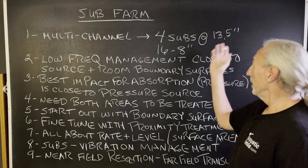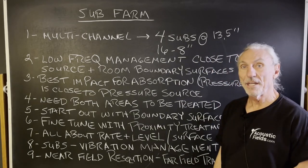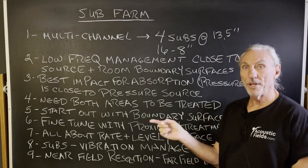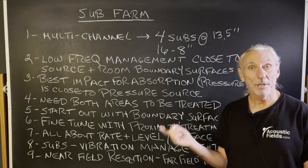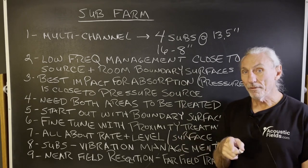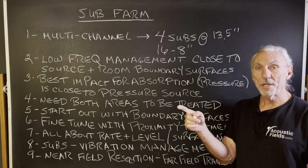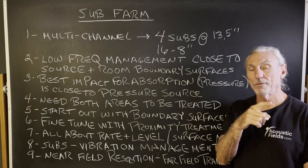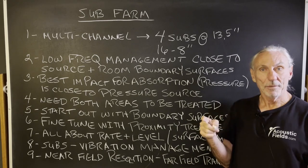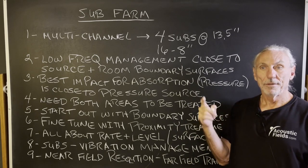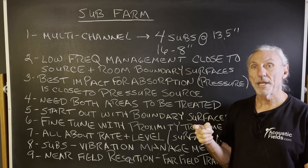So for multiple channel, we have four subs at 13 and a half inches each. We have 16 eight-inch drivers at the front of the house with four channels, because we took the center channel and split it. We have a left center, right center, left, and a right channel — four speakers across the front of this theater. They're all the same type, the same radiation pattern, the same manufacturer.